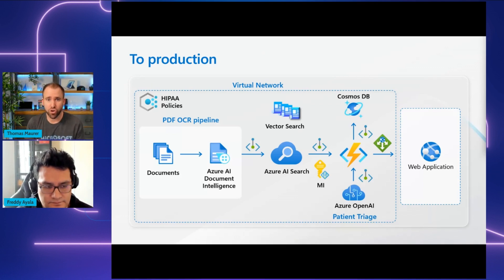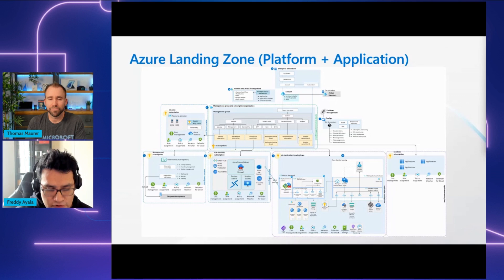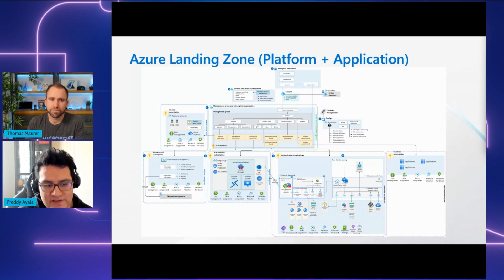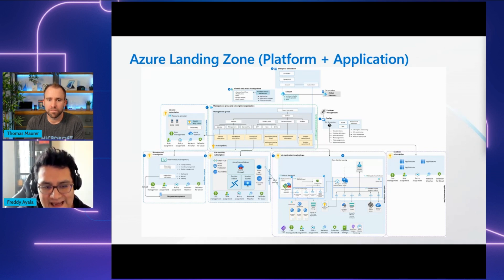Is there a way for companies to implement these best practices by default when they deploy AI applications? We are working hard to provide reference implementations — end-to-end baseline architectures designed to offer a foundational baseline for building and deploying enterprise GenAI and machine learning applications that leverage OpenAI language models. This reference architecture illustrates how to integrate an Azure platform landing zone with shared components such as connectivity, management, identity, Express Routes, and firewalls.